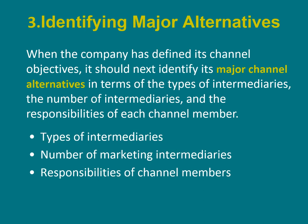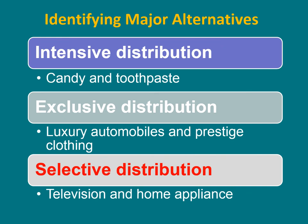Step three: identify major alternatives. When the company has defined its channel objectives, it should identify its major channel alternatives in terms of the type of intermediaries, the number of intermediaries, and the responsibilities of each channel member. There are three alternatives: intensive distribution for a convenience product, selective distribution for a shopping product, and exclusive distribution for luxury, prestigious, or specialty products.